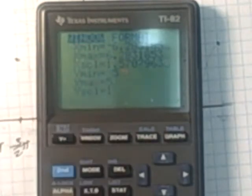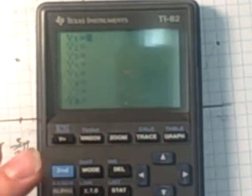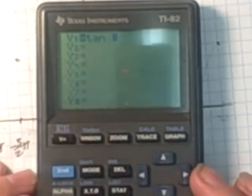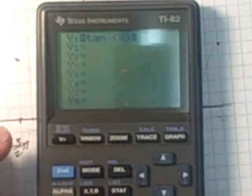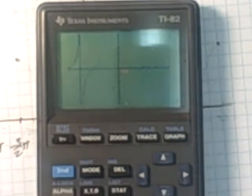So once you have that set up like that, you then push your y equals button, and type in tangent, and then bracket it, x, the variable x here, bracket, and then hit the graph button up here, and you can see what you're going to get here.